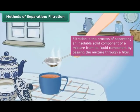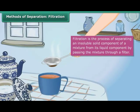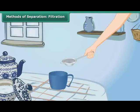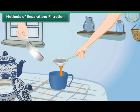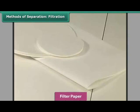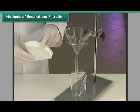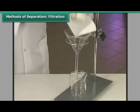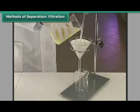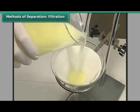Filtration, however, cannot remove the solid substances dissolved in a liquid. Sometimes, fine particles of the solid component pass through the strainer used as the medium for filtration. In such a situation, filter paper is used. A filter paper is a special paper which has millions of tiny holes in it. While the liquid can pass through these holes, the solid particles remain on the filter paper.